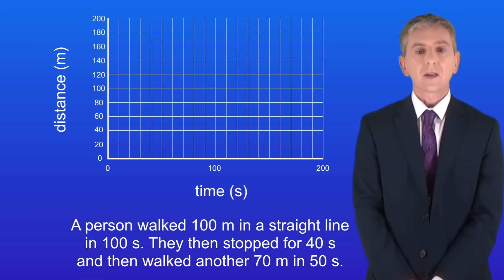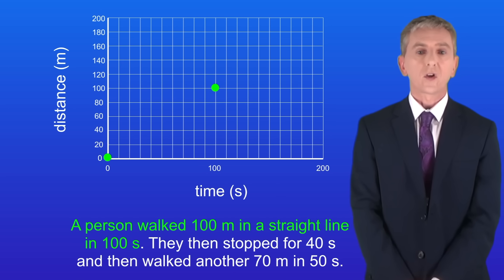Here are the axes. We have distance on the y-axis and time on the x-axis. We start by placing a point at 0 seconds and 0 meters. This represents the person before they started walking. Now we place a dot at 100 meters and 100 seconds. This represents the first part of the journey.